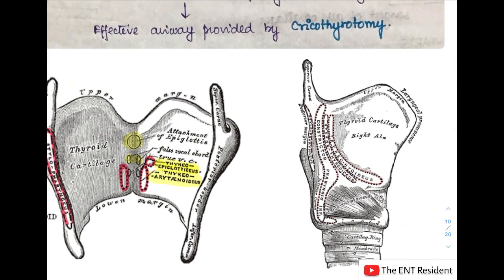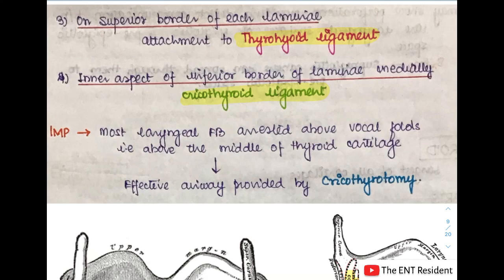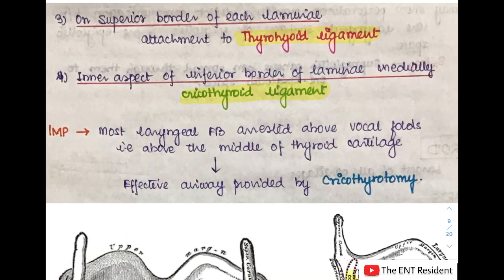On the outer surface, the oblique line gives attachment to the thyrohyoid, sternothyroid, and inferior constrictor muscles. The superior border of each lamina gives attachment to the thyrohyoid ligament, and the inner aspect of the inferior border gives attachment to the cricothyroid ligament. Clinically, most laryngeal foreign bodies get arrested above the level of the vocal cords at the level of the middle of the thyroid cartilage; in such cases, emergency airway management is achieved by cricothyroidotomy.